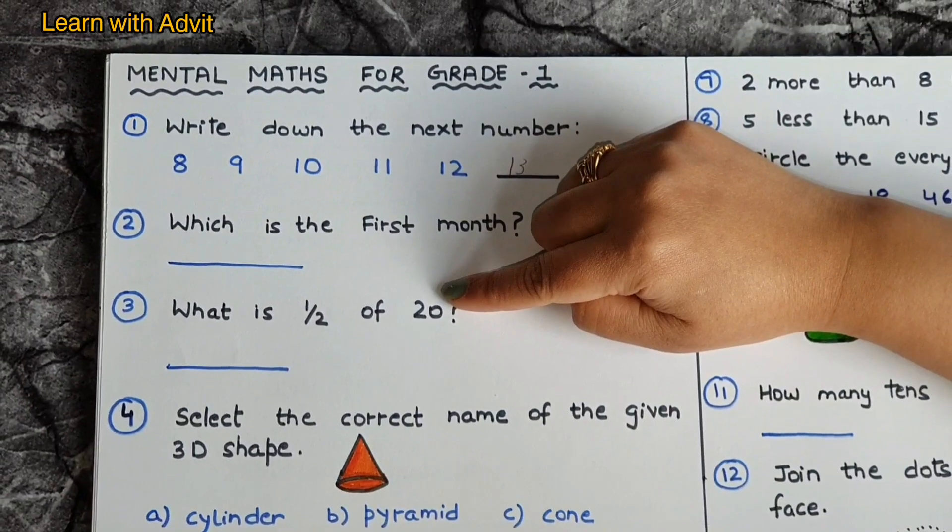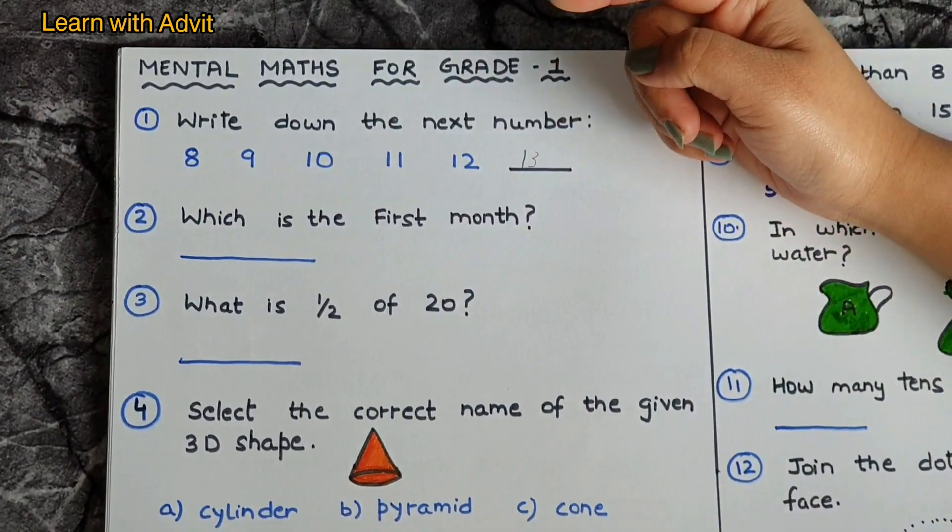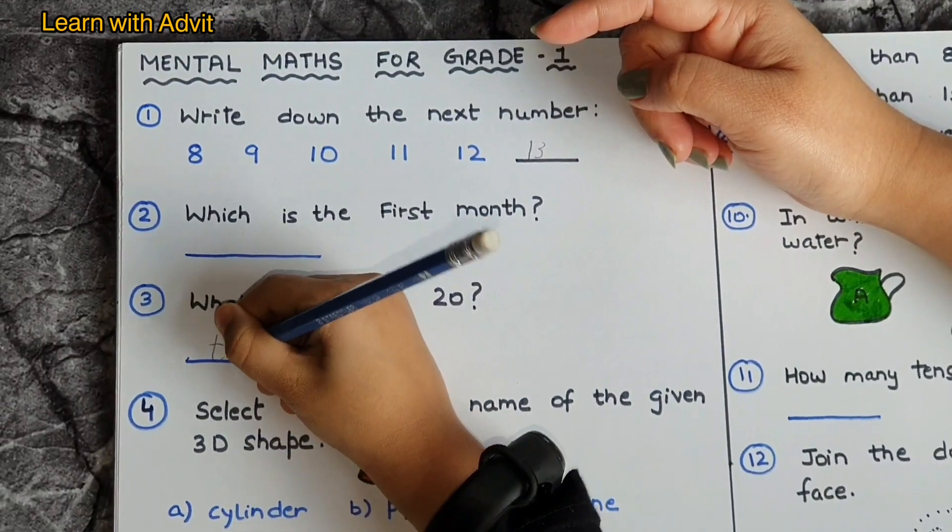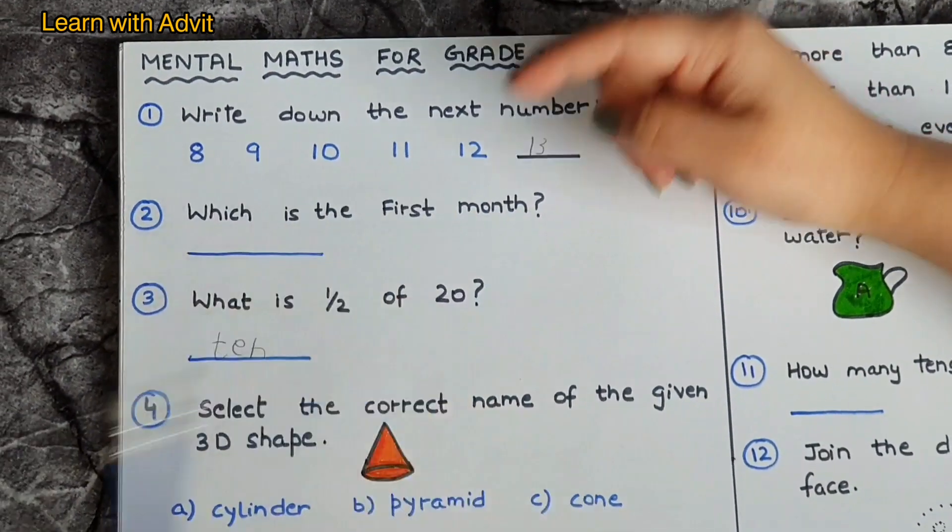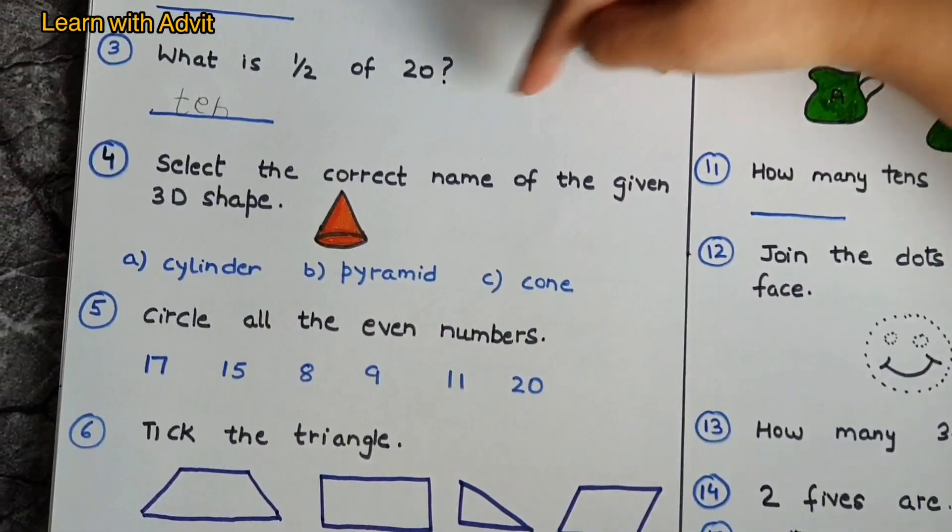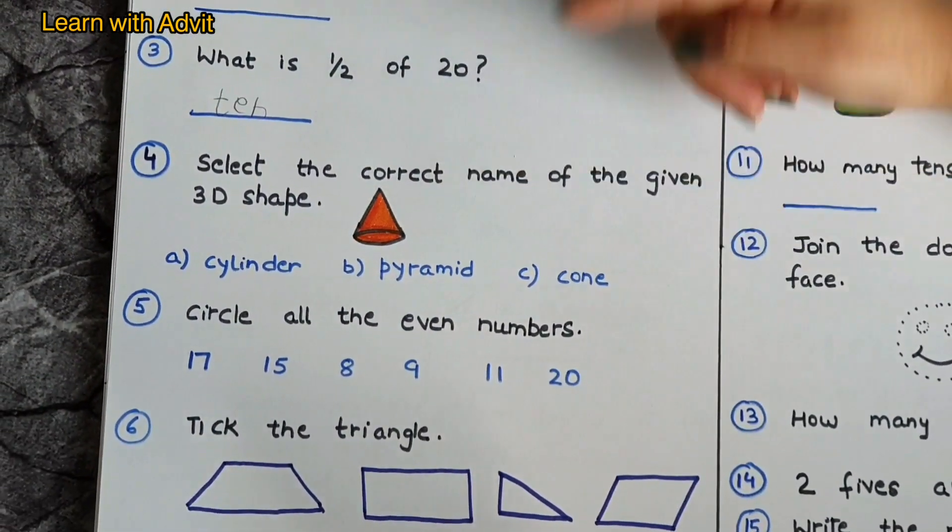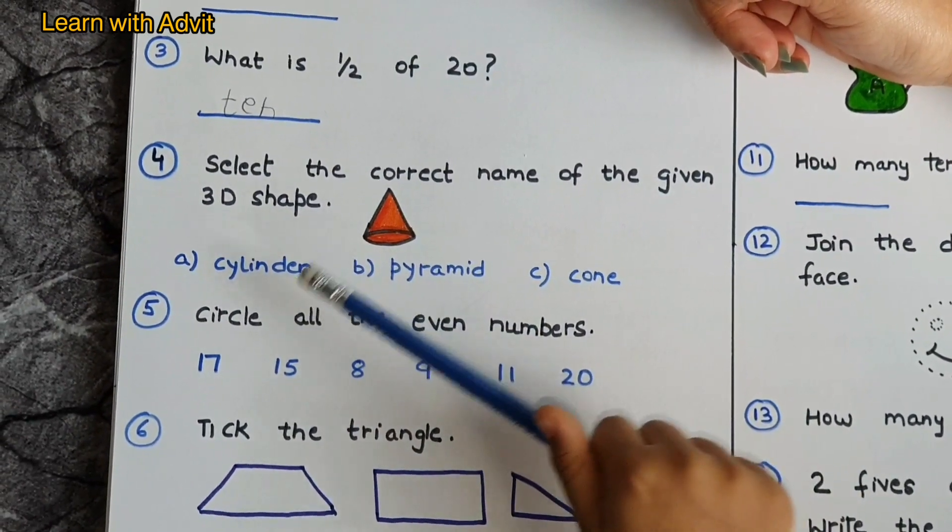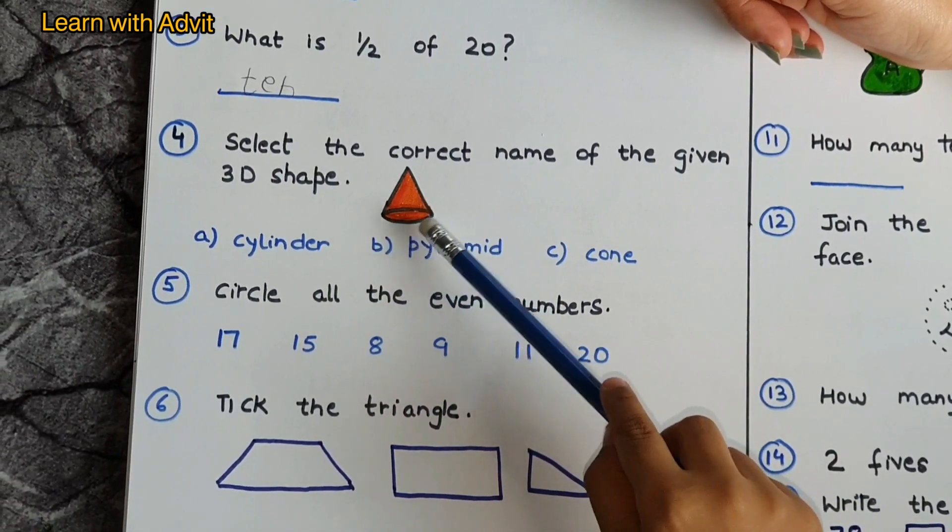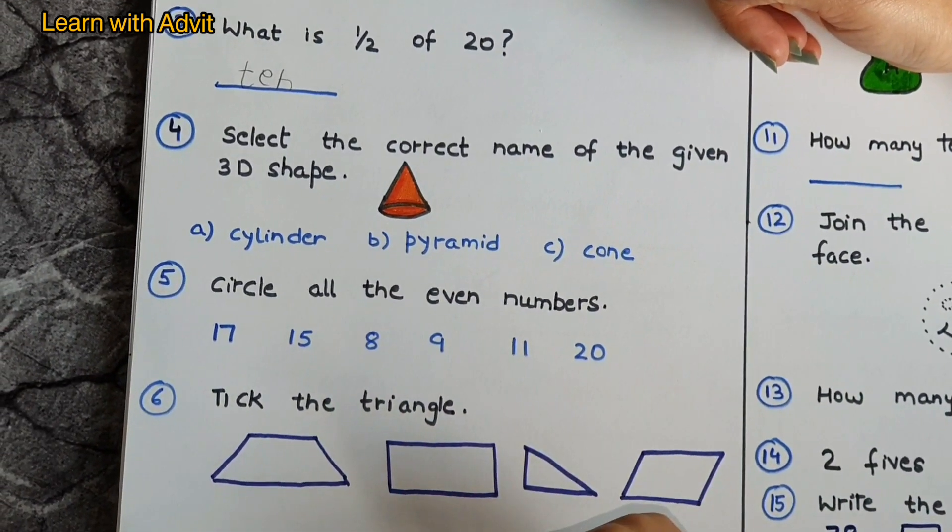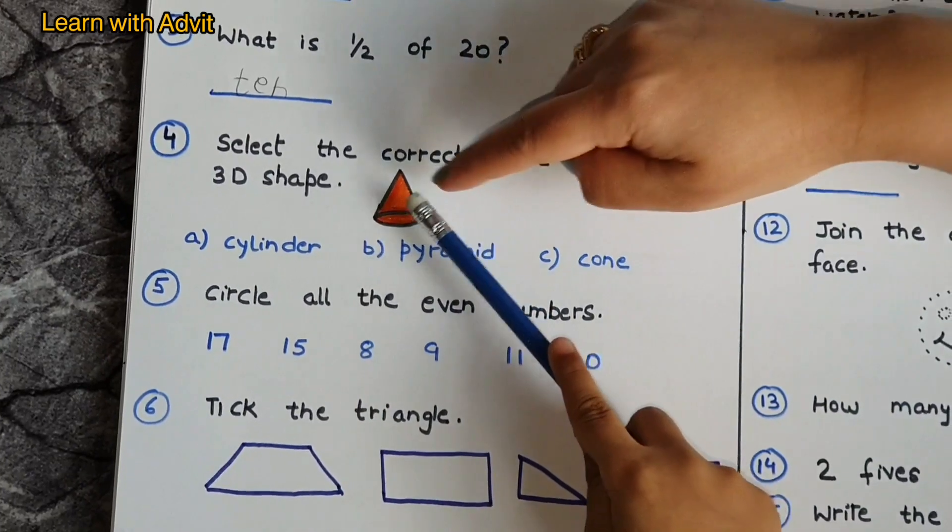Write down ten. Select the correct name of the given 3D shape. Which shape is this: cylinder, pyramid, or cone? Cylinders are round so it cannot be cylinder. Pyramids have lots of triangles and one square on the bottom, so this doesn't have it, so it's not a pyramid.